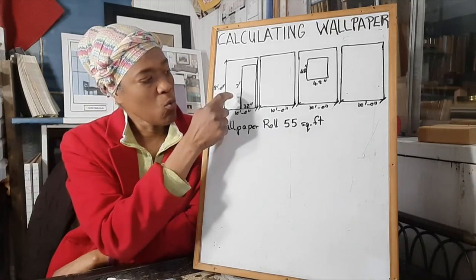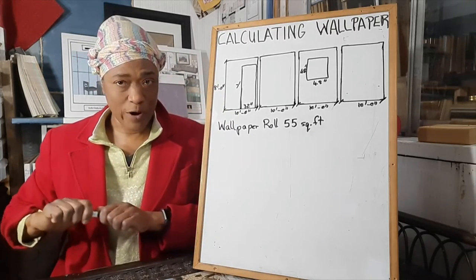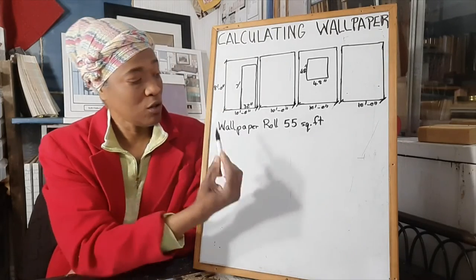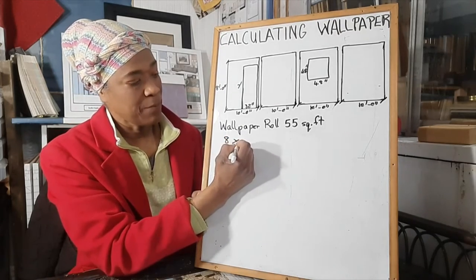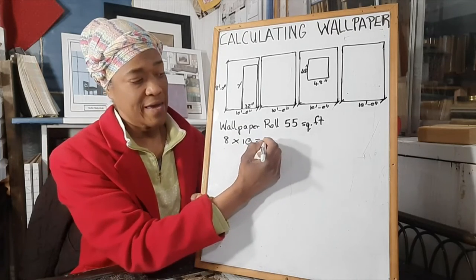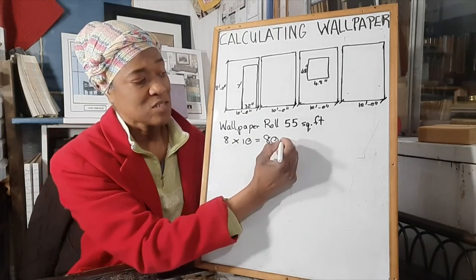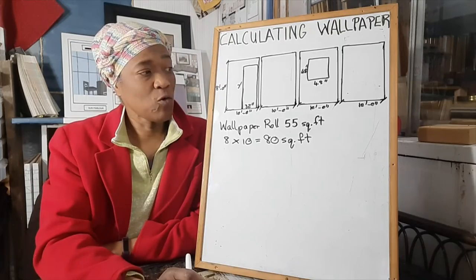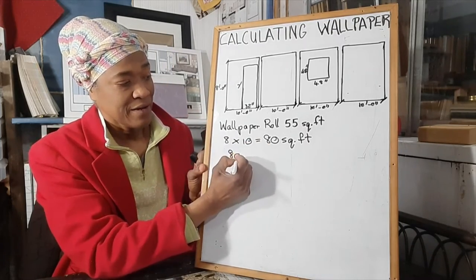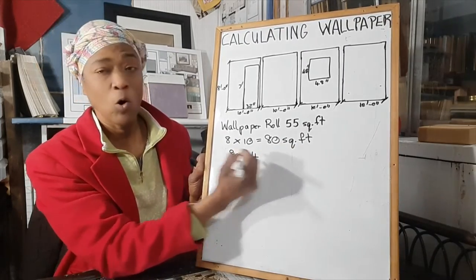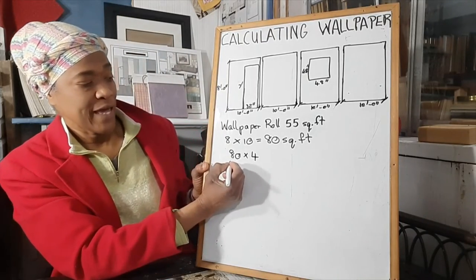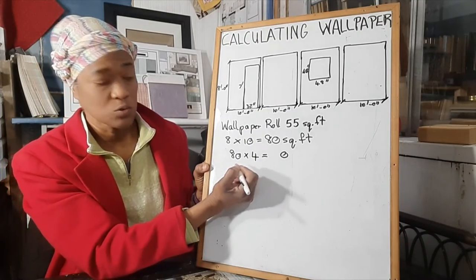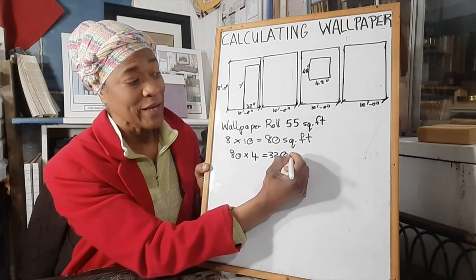The first thing we want to do is find the square footage of our walls. One wall is eight feet high and ten feet wide, so the square footage is eight multiplied by ten, which equals 80 square feet. All four walls are the same measurement, so we multiply 80 by four: 80 times 4 equals 320 square feet. So the total wall area is 320 square feet.